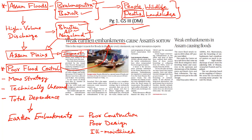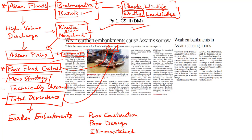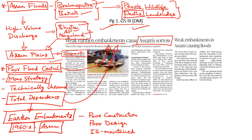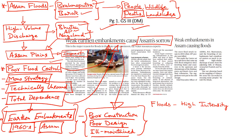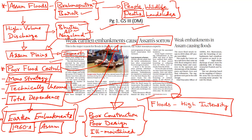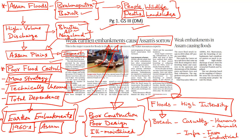Coming back to the Assam floods, this article reports that Assam's mono-strategy of depending totally on earthen embankments for flood control has caused more misery during the flooding season. Since the 1960s, Assam started relying on earthen embankments, but these are not sturdy or durable enough and require constant maintenance. Over the years, these embankments have weakened and become ineffective due to poor design, poor construction and lack of maintenance. So during the monsoon season, whenever there is a high-volume discharge, these technically unsound earthen embankments tend to breach, leading to even higher intensity floods. Studies have shown that whenever these outdated embankments breach, there is a corresponding increase in the casualty rate among humans and animals, and in damage to farming and industrial infrastructure.